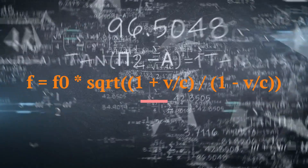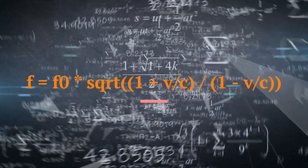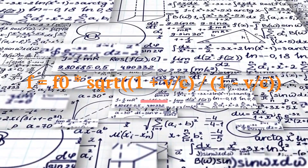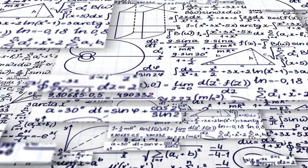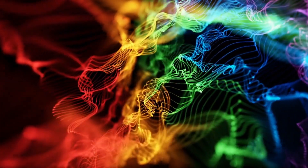As you can see, as v approaches c, f becomes very large, meaning that the light becomes very blue. In fact, if v equals c, f becomes infinite, meaning that the light becomes invisible to us.